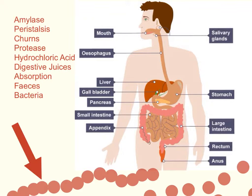Saliva also contains an enzyme called amylase. What digestive enzymes do is break down large molecules of food into smaller molecules that can then be absorbed into the bloodstream — small enough and soluble enough to be absorbed. What amylase does specifically is break down starch molecules, which are large, into smaller sugar molecules.